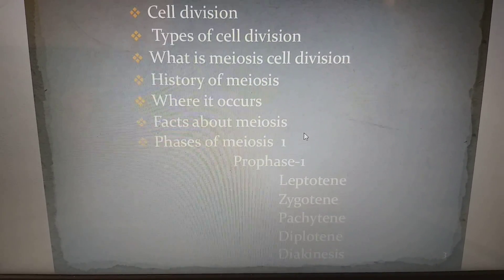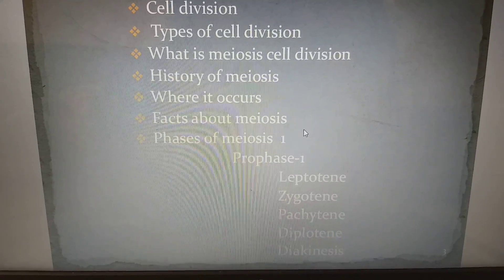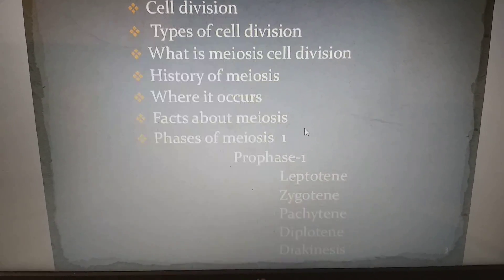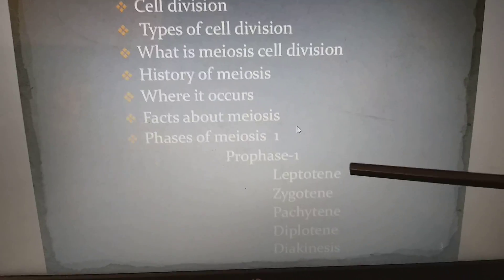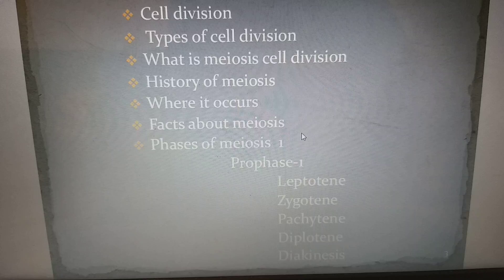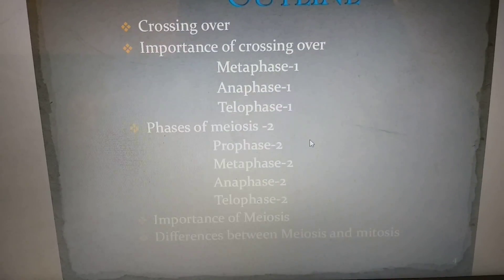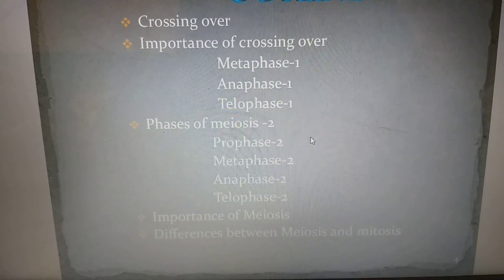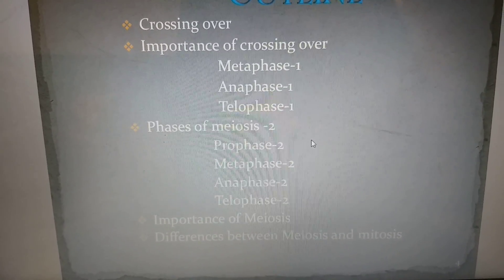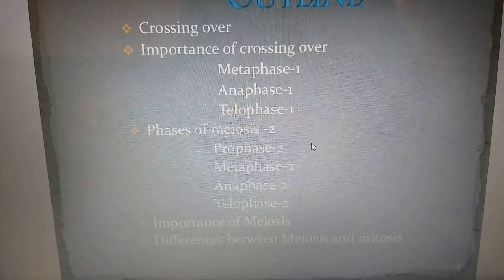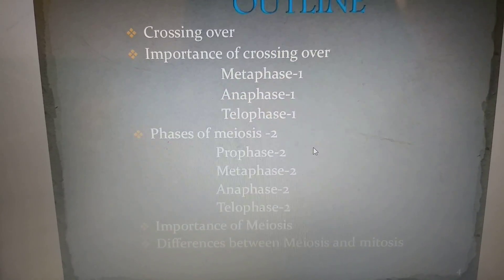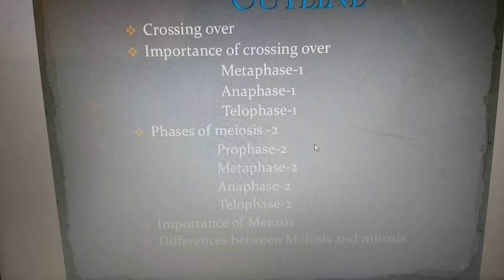Meiosis 1 is divided into prophase 1, metaphase 1, anaphase 1, and telophase 1. Prophase 1 is in turn divided into leptotene, zygotene, pachytene, diplotene, and diakinesis. We will also cover crossing over, importance of crossing over, then metaphase 1, anaphase 1, telophase 1, phases of meiosis 2 including prophase 2, metaphase 2, anaphase 2, telophase 2, importance of meiosis, and the difference between mitosis and meiosis.